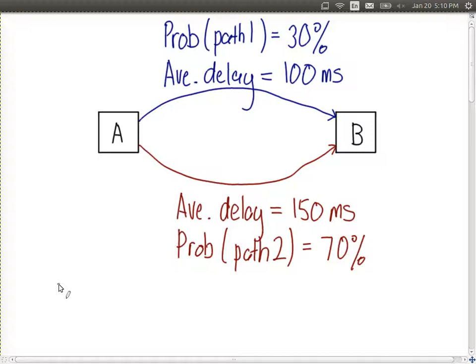And also let's say we know the probability of sending packets across each path. So the probability that A sends packets across path 1 is 30% or 0.3 and 70% of the packets are sent via path 2.